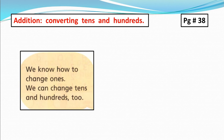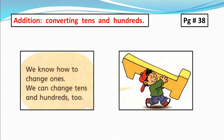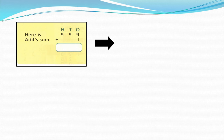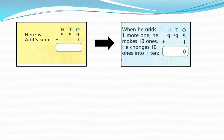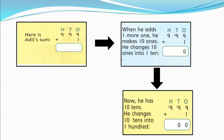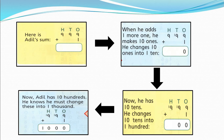Now here I am going to do addition converting 10s and 100s — page number 38. We know how to change 1s; we can change 10s and 100s too. See what happens when Adil adds 1 more block to 999 blocks. Here is Adil's sum: there are 900, 9 tens and 9 ones, and he adds 1 more one. When he adds 1 more one, he makes 10 ones. He changes 10 ones into 1 ten. Now he has 10 tens. He changes 10 tens into 1 hundred. Now Adil has 10 hundreds. He knows he must change these into 1000.